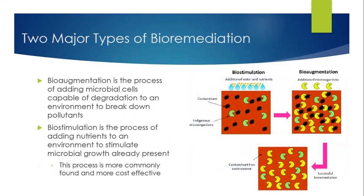There are two major types of bioremediation. The first type is bioaugmentation, which is the process of adding new microbial cells that are capable of degradation of a pollutant to the environment in order to reduce the pollution in that environment. The new cells being added can be wild-type cells, or more commonly, they are genetically engineered to break down a certain type of pollutant.